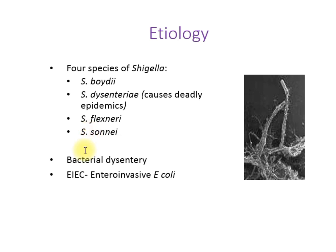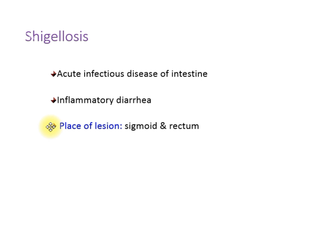Bacterial dysentery is also caused by a type of E. coli which is EIEC, entero-invasive E. coli. Shigellosis is an acute disease of the intestine; it can also be called inflammatory diarrhea. It differs from diarrhea because in diarrhea there is only loose watery stool, while in dysentery there is also mucus and blood in the stool. In shigellosis, the lesions are seen in the sigmoid and rectum region of the large intestine.